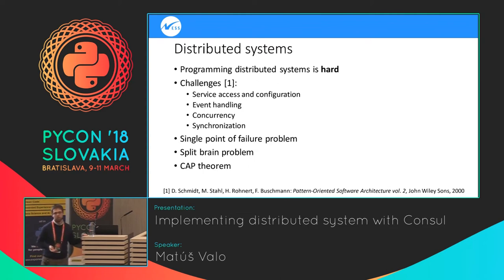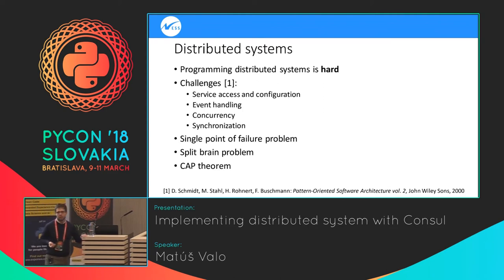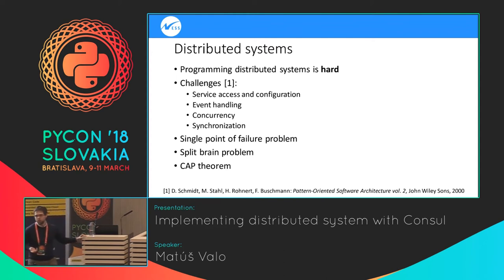Concurrency and synchronization is a very well-known problematic area. It's problematic even in classical programs — when using multiple threads, you have problems with locking, deadlocks, live locks, etc. It's hard even on a single node. If it's distributed over the network, you run into even bigger issues.